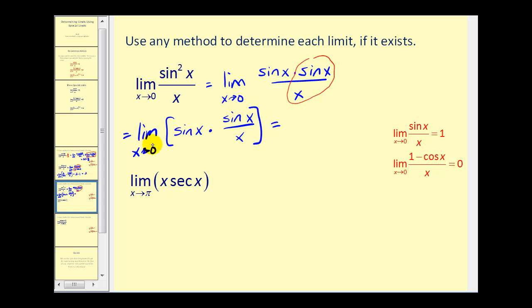Again, I could rewrite this as a product of two different limits, but let's leave it in this form. The limit of sin(x) as x approaches zero—well, that's zero. And then the limit of sin(x) divided by x, of course, is equal to one. We know that by now. So our limit is equal to zero.